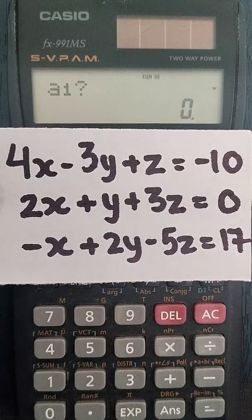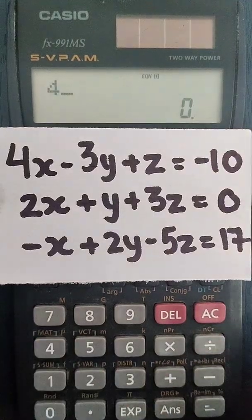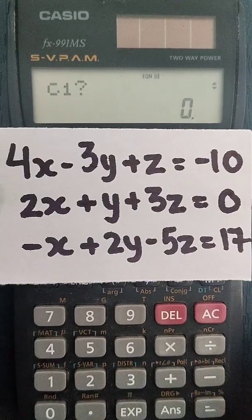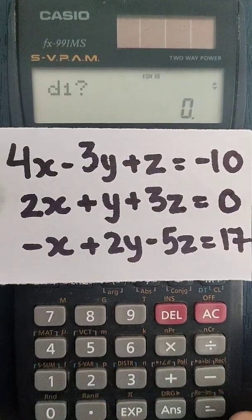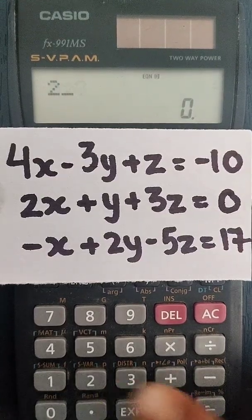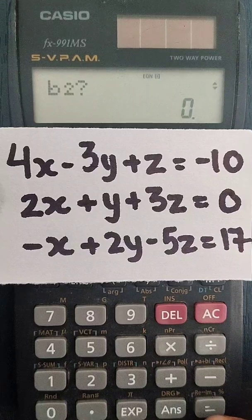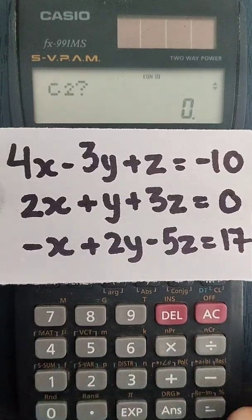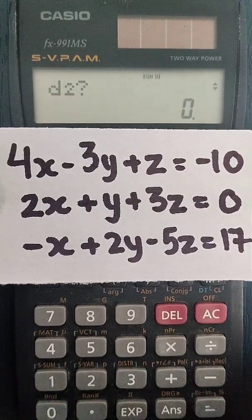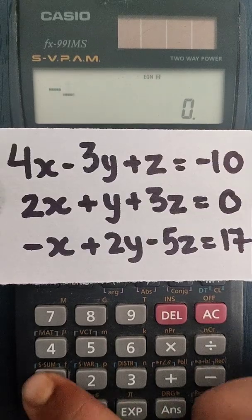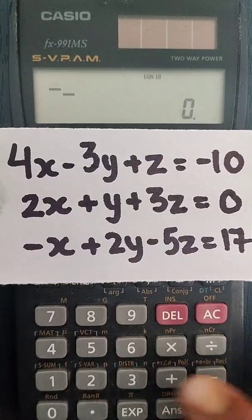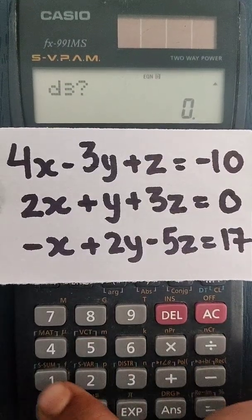And now what we have to do, we have to just enter the value. So a1 here will be 4, b1 here will be minus 3, c1 will be 1, and d1 will be minus 10. Likewise, a2 will be 2, then b2 will be 1, c2 will be 3, and d2 here is 0, so it will be 0. a3 is minus 1, b3 is plus 2, c3 is minus 5, and d3 is 17.